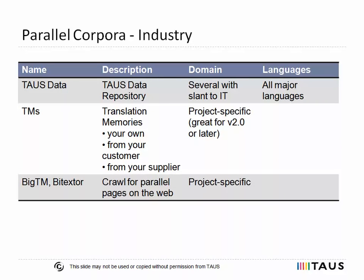An important source of parallel corpora are translation memories coming from the industry. Taos data, which is a neutral and secure super cloud of industrial translation memories, contains more than 50 billion words across 15 industrial sectors and covers all major world languages. Project-specific translation memories from your own translation database, from your customer or supplier, can also be a good source of parallel data for MT training. A simple script will extract parallel corpora from translation memories, which can then be directly fed to an SMT engine.